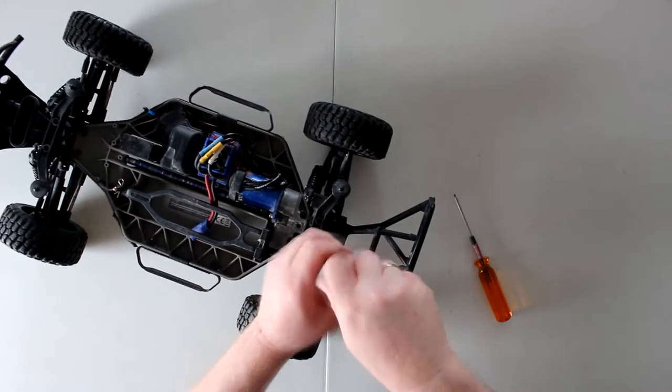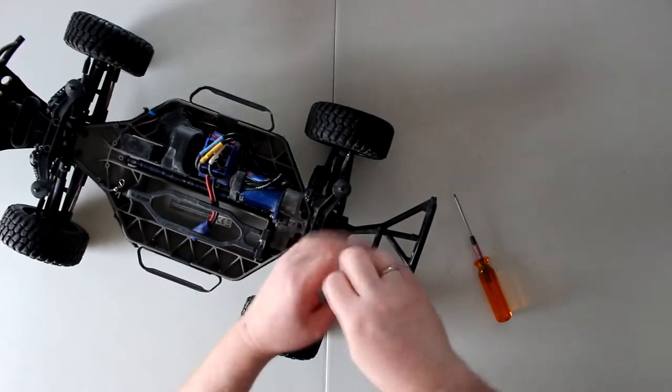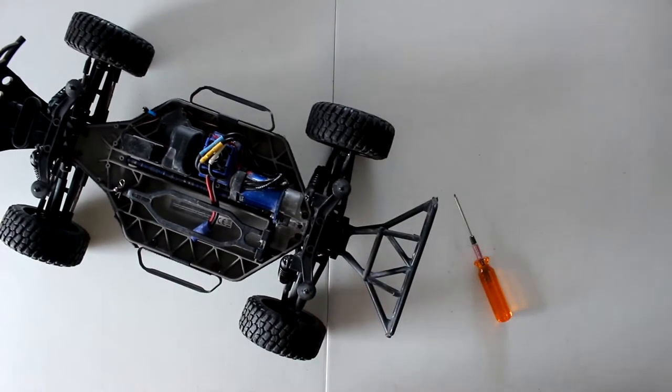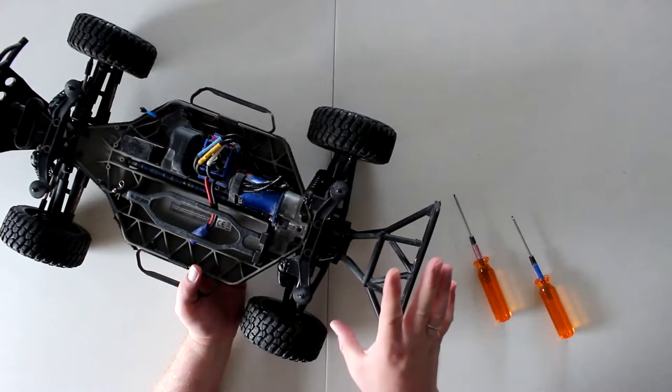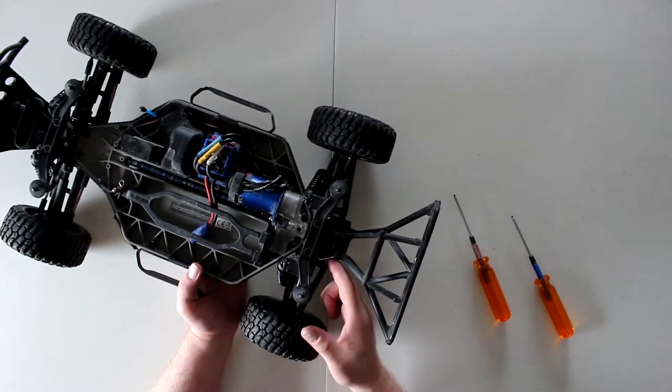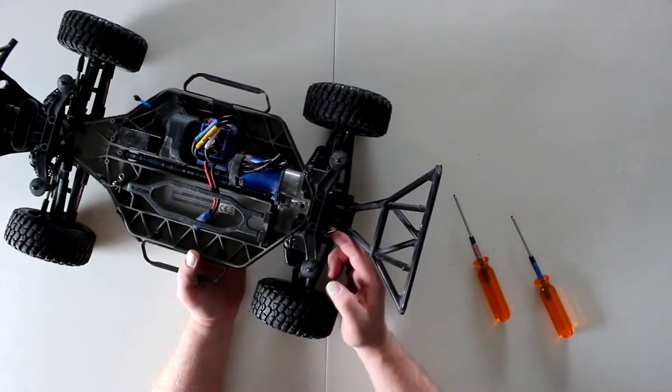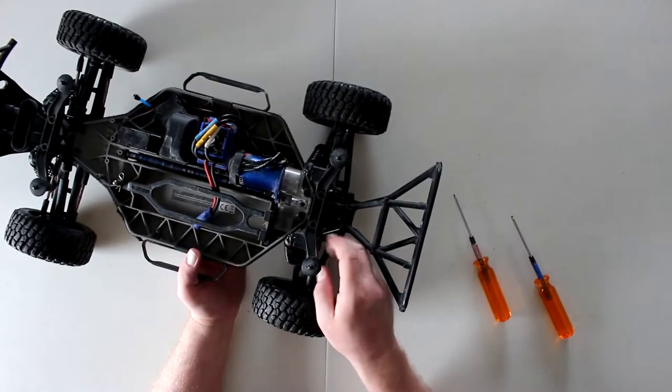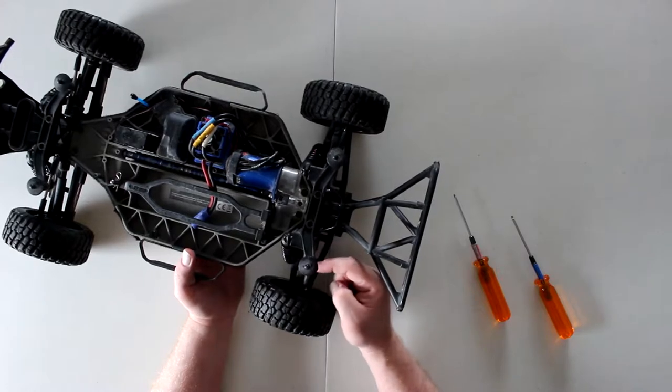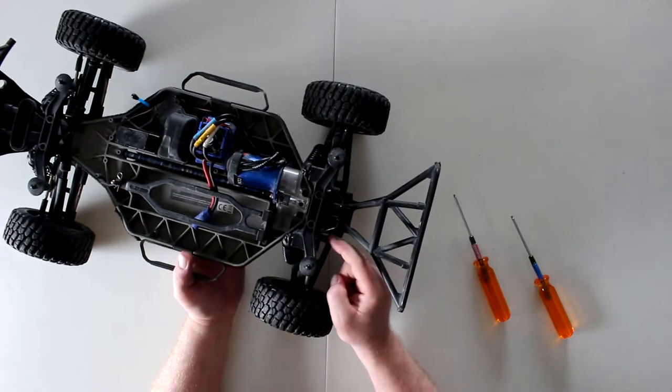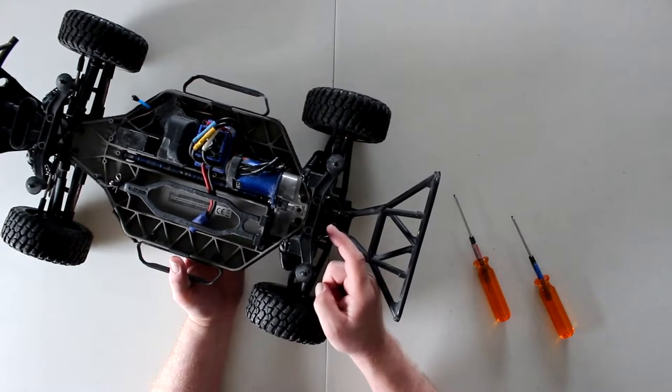One of the things I try to do is not dismantle the complete machine A to Z to do something. The reason I need to remove these two here is just to move it side to side to be able to remove the linkages for the toe link in the back and access the screws.